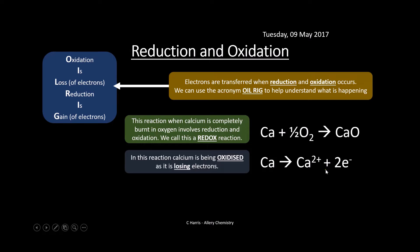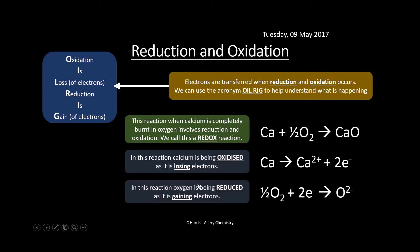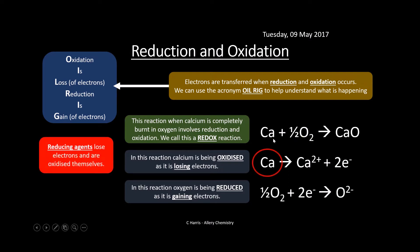A way to identify this is by splitting the reaction into two half equations. Looking at calcium first: calcium forms Ca²⁺ and two electrons are produced, so calcium is being oxidized — it is losing electrons. Looking at the other half: oxygen is being reduced, accepting electrons to form O²⁻, gaining electrons. Combining these two half equations gives the overall reaction, which we call a redox reaction.